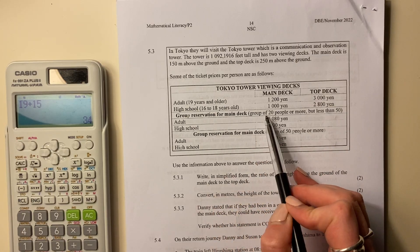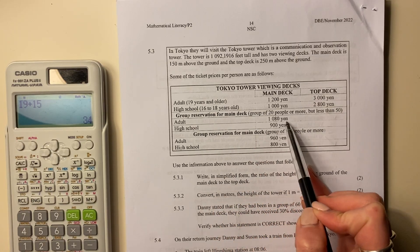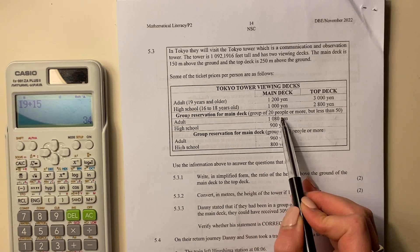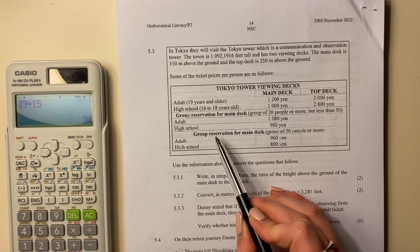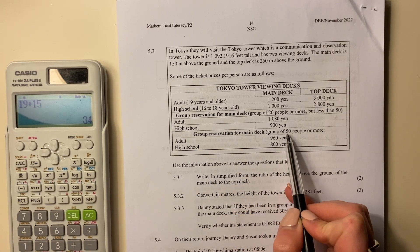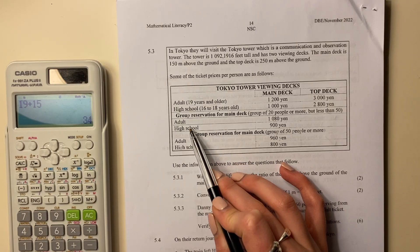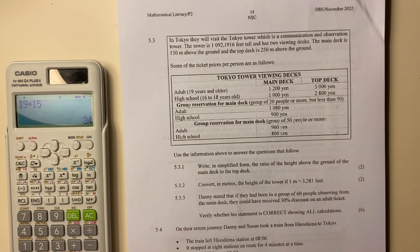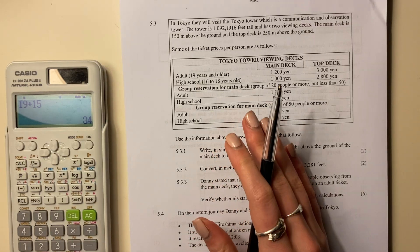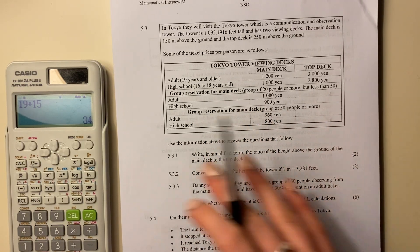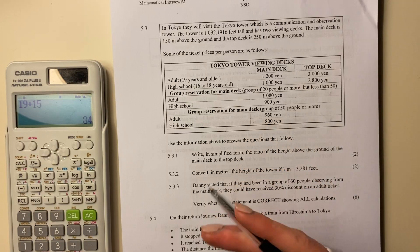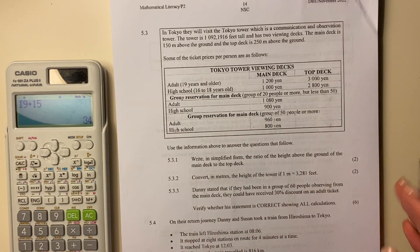Then they have groups of between 20 and 50. Here's the cost per person. And then over here, we have groups that are larger than 50. Again, the cost per person, depending on the type of person, if you're an adult or high school student. Don't spend too much time looking at the question's information. Go straight to the questions and it often helps inform you as to what you need to do.